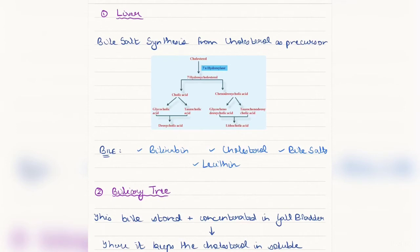In the biliary tree, the bile is stored and concentrated in the gallbladder, as I told you earlier. But the important point over here is that the bile salts present in the bile actually help keep the cholesterol in the soluble state, thus preventing bile stone formation in the gallbladder.